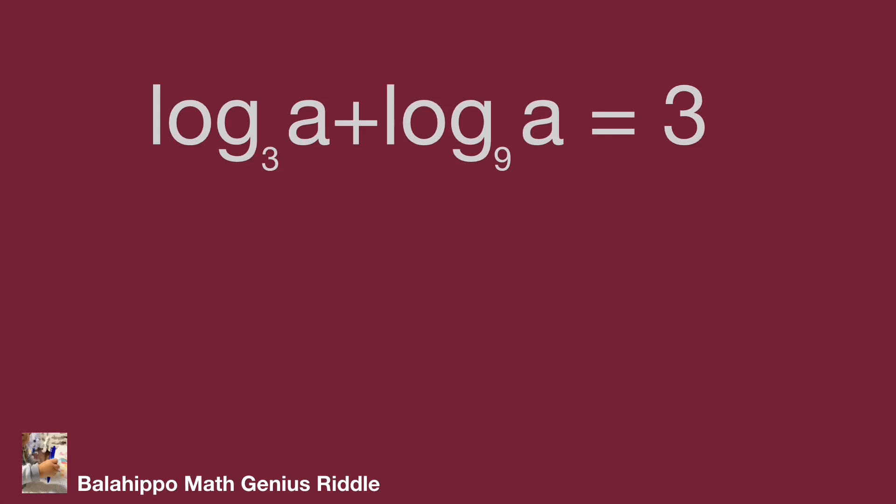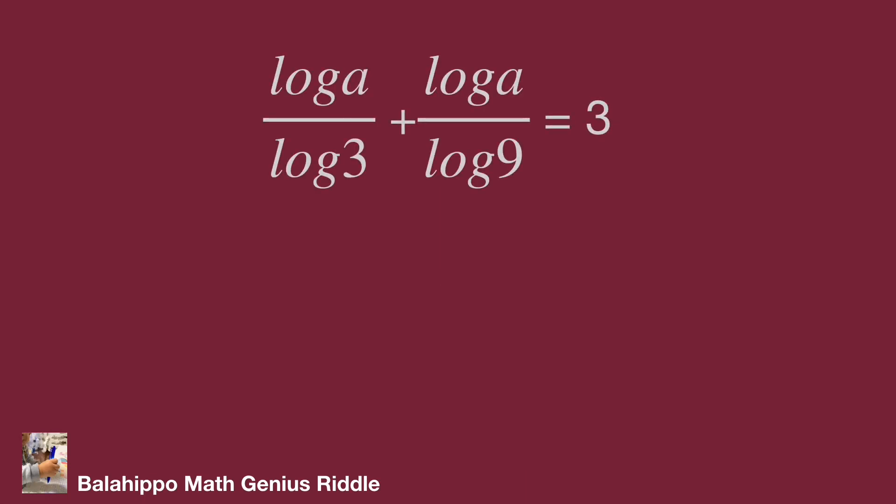The rule of logarithm: log base y of x equal to log x over log y. Adapt this formula to these two items in the given equation. Then we get log A over log 3 plus log A over log 9 equal to 3.